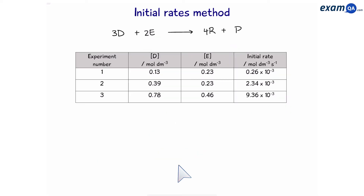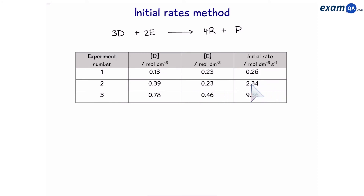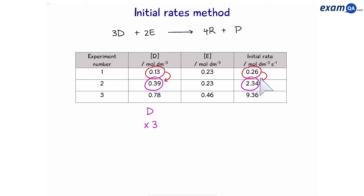Let's try another one. We have D plus E reacts to make R and P, and we've been given the data from a number of experiments. Let's work out the order of D and E. To make things easier, let's ignore the powers of ten part for now and put that back later. In experiment 1, we can see that D has tripled, E has remained constant, and the rate has times by 9. If it's not obvious how much the rate has changed, all you have to do is final divided by initial — so 2.34 divided by 0.26 gives us 9.